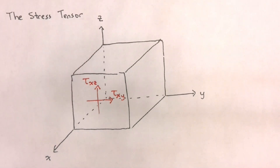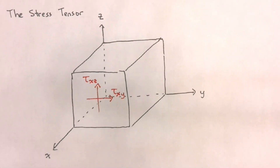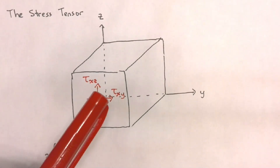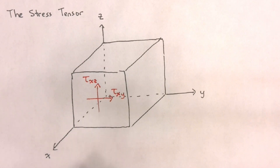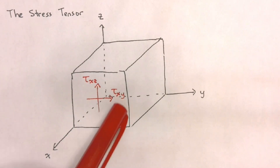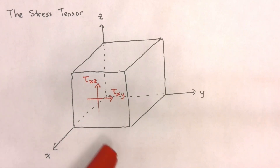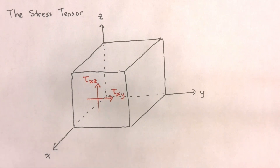We are going to follow this trend, where the components of our stress tensor will have as a first subscript the face in which they are acting, and as a second subscript the direction in which they are acting. Now, these are only shear stress components.